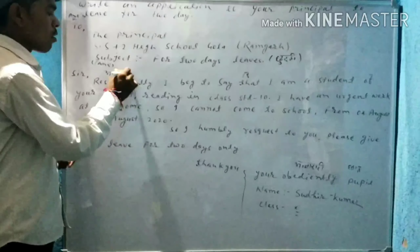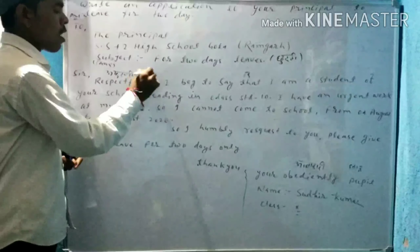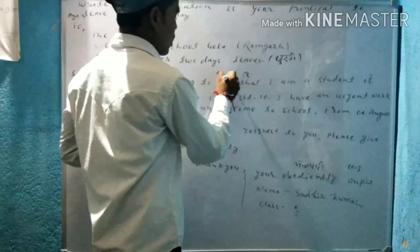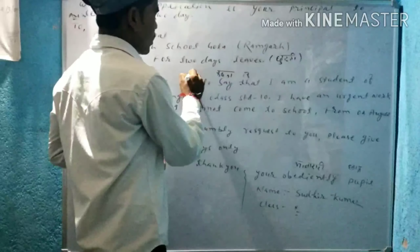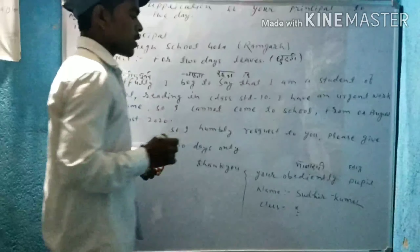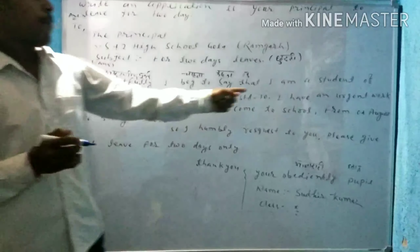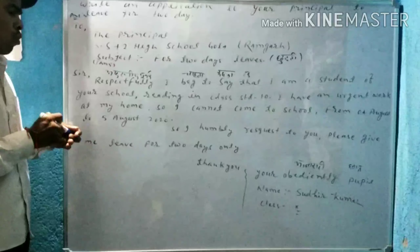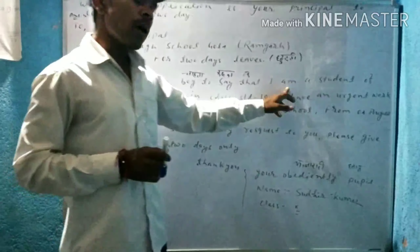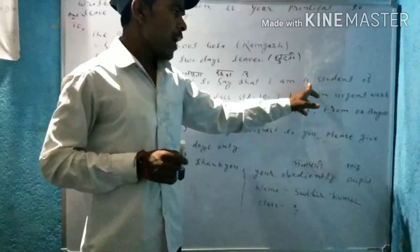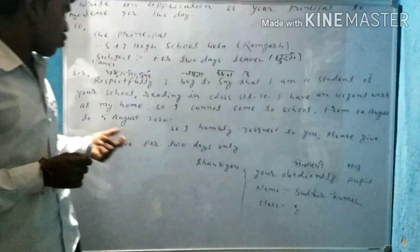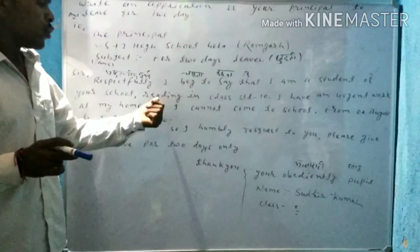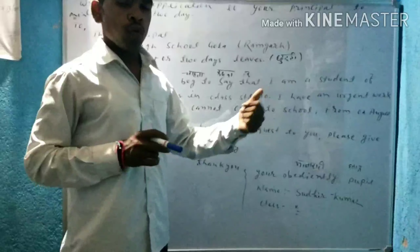फिर आगे लिखें: 'Sir, Respectfully' — मतलब होता है 'आदरणीय पूर्वक'। 'I beg to state that' — मतलब: मैं कहना चाहता हूँ। 'I am a student of your school' — मैं आपके स्कूल का एक छात्र हूँ।